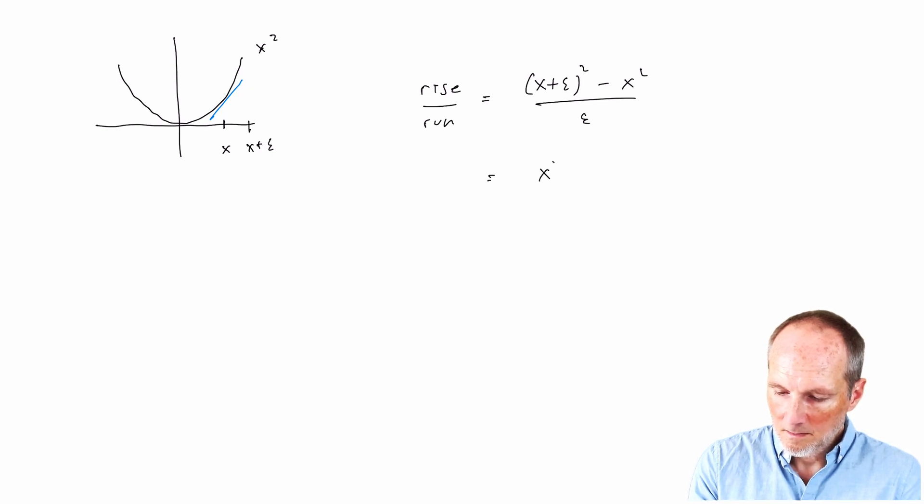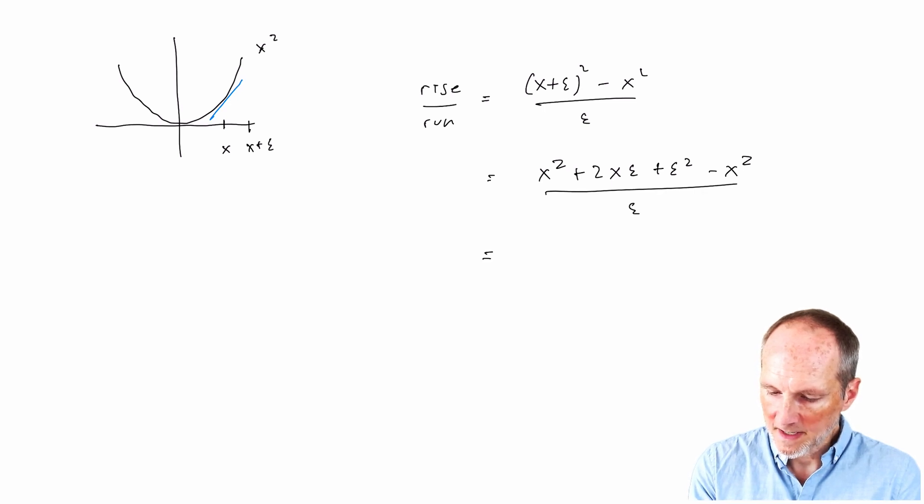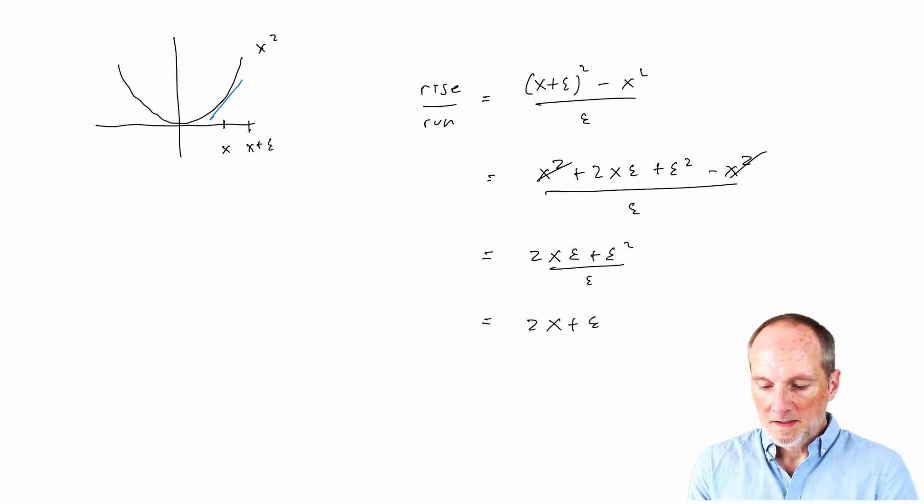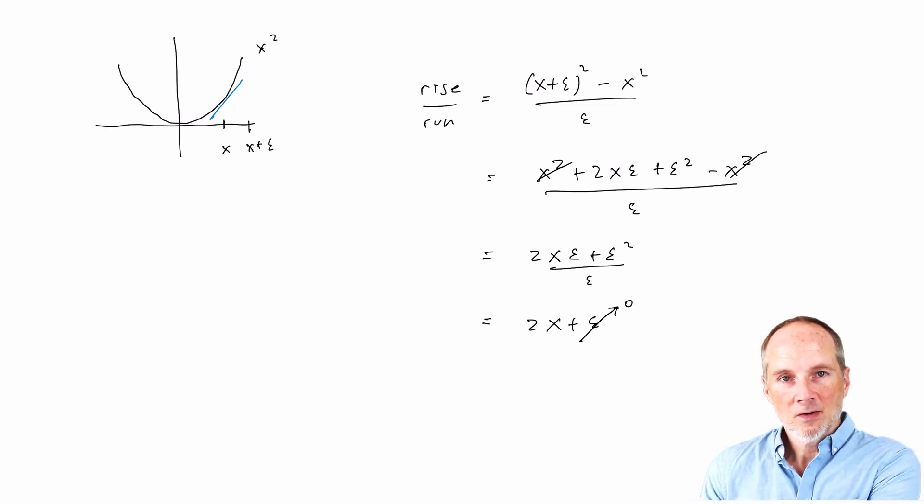Let's expand. We cancel the x squareds. Let's divide through by epsilon. And we can see that when epsilon gets small, that term just goes to zero. It vanishes. And what we end up with is the expression is 2x.